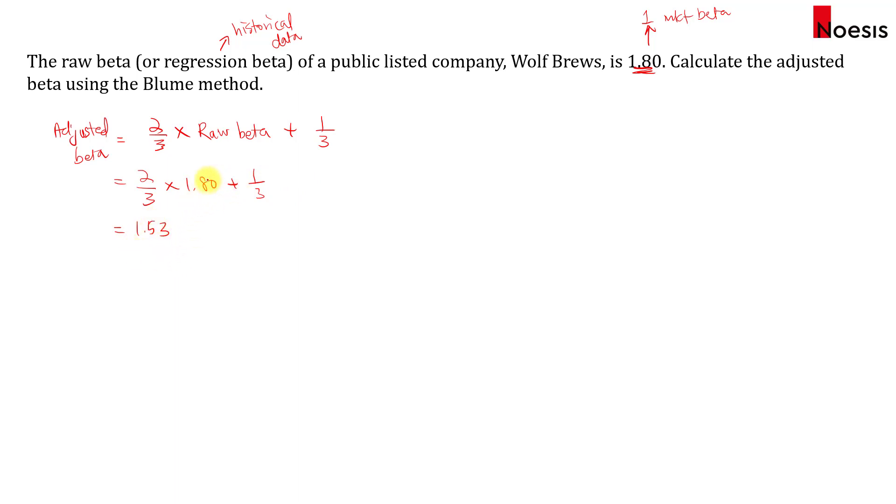So you will see that if we apply the formula, the beta will actually decline. As remember, we are expecting the beta to revert back to 1 in the long run.